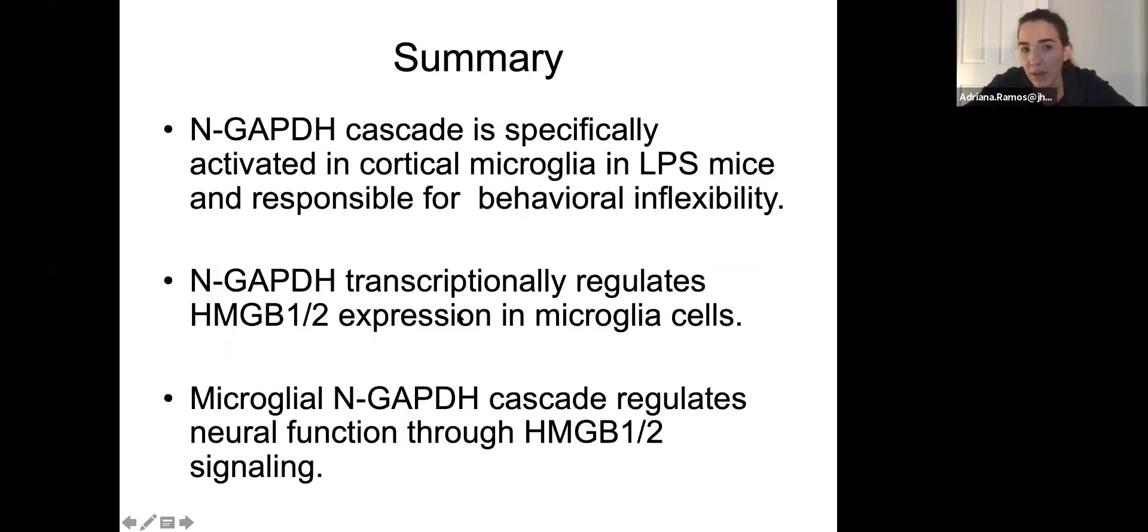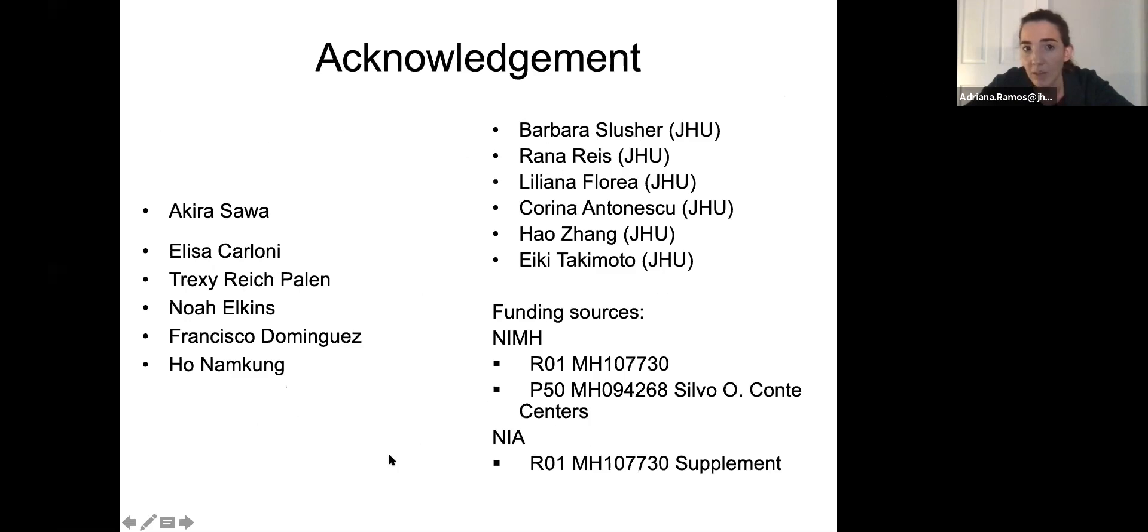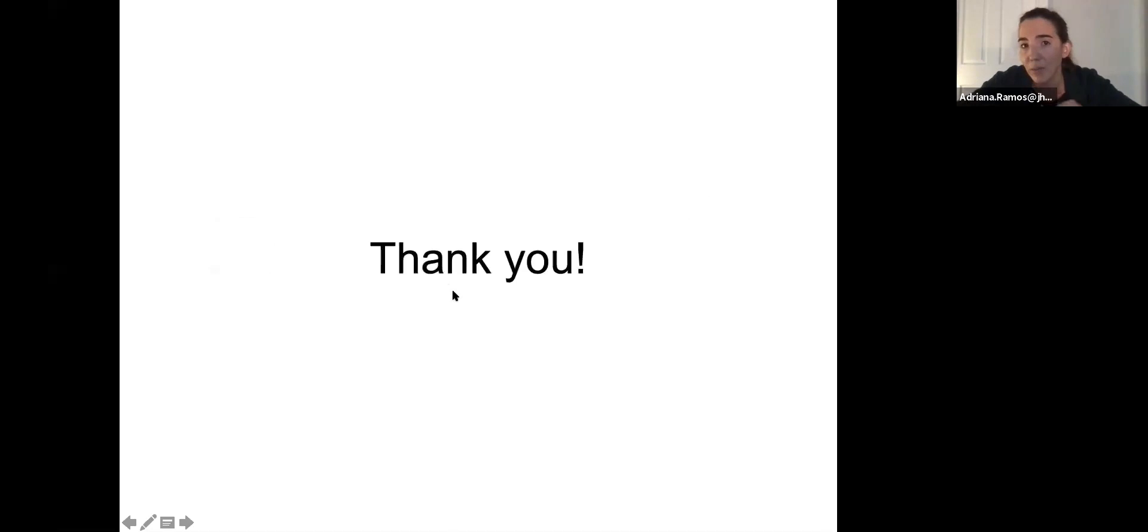With all of this, what I told you today is that the nuclear GAPDH cascade is specifically activated in cortical microglia in LPS mice and responsible for behavioral inflexibility. The nuclear GAPDH transcriptionally regulates HMGB1 and 2 expression in microglia cells. As well, microglia and GAPDH cascade regulates neural function through HMGB1 and 2 signaling. I want to acknowledge my mentor Akira Sawa and all the people in my lab that participated in the study, as well collaborators inside Hopkins and our funding sources. Thank you all and I will take any questions.